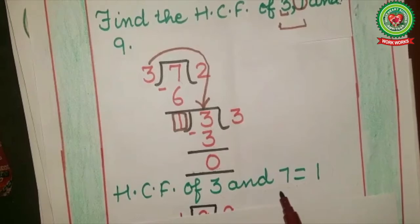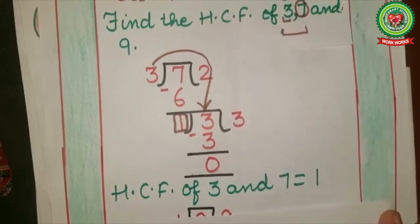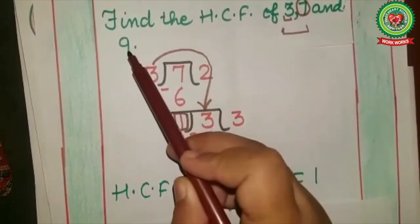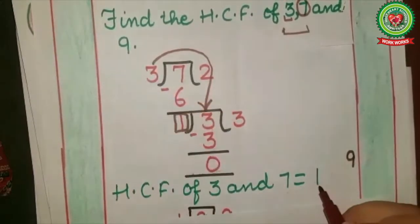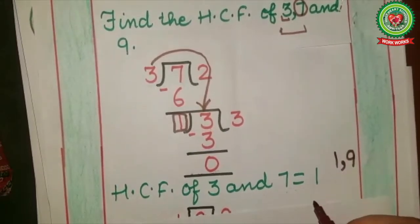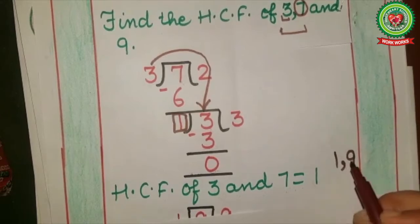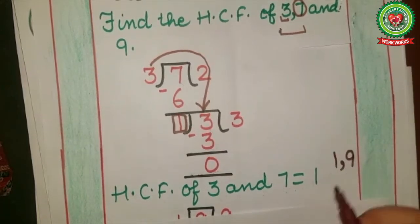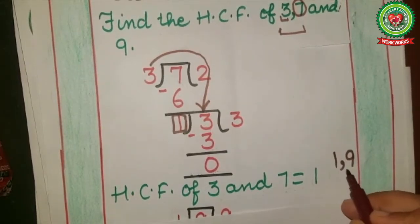HCF of 3 and 7 is equal to 1. Now I got the answer for HCF of 3 and 7, but in the beginning I had three numbers: 3, 7, and 9. So 9 is still left. Now we will divide this third number, 9, by the HCF of the two numbers. HCF of 3 and 7 is 1, so we will divide 9 by 1. Again I am having two numbers and I have to find the HCF of these two numbers. Which number is greater between 1 and 9?